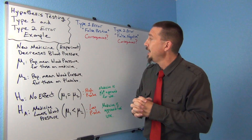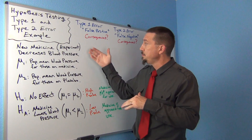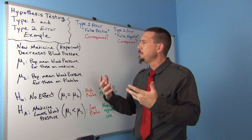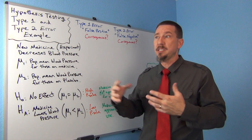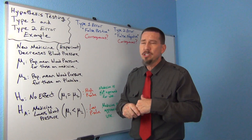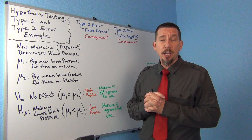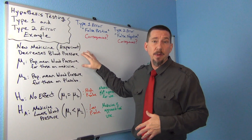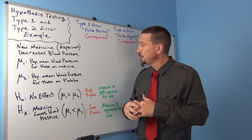High blood pressure is very dangerous and has a lot of bad effects. If you do have high blood pressure, being on a blood pressure medicine makes a lot of sense. Suppose a pharmaceutical company is trying to distribute this medicine to the population, but they have to get approval first — they have to make sure the medicine actually works. They would run a randomized experiment using random assignment and controlling confounding variables so they can prove cause and effect.